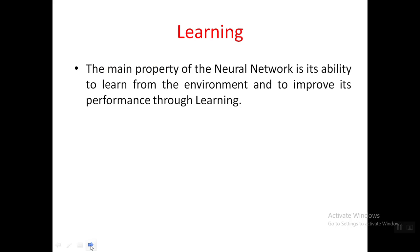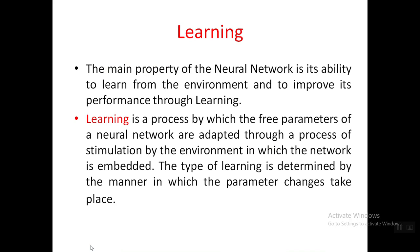Learning in the neural network context is different from classroom learning or other scenarios. In neural network context, learning is defined as: a process by which the free parameters of a neural network are adapted through a process of stimulation by the environment in which the network is embedded. The type of learning is determined by the manner in which parameter changes take place.